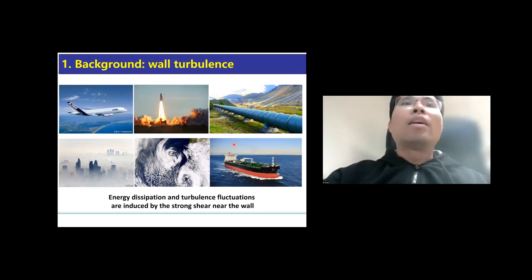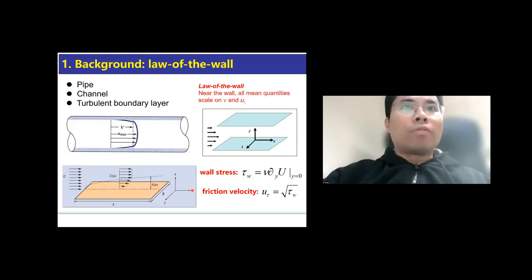Actually, the energy dissipation is the largest at the wall compared to flows in other regions. A long research interest is to understand how these statistical averages vary with the flow speed. In other words, what is the Reynolds number dependence for the turbulence statistics? As paradigm wall flows, turbulent channel pipe and boundary layer have been studied over a century. According to the celebrated law of the wall by Prandtl, near the wall, all the mean quantities scale on the molecular kinematic viscosity nu and the friction velocity u_tau, where u_tau is defined by the square root of wall shear stress.